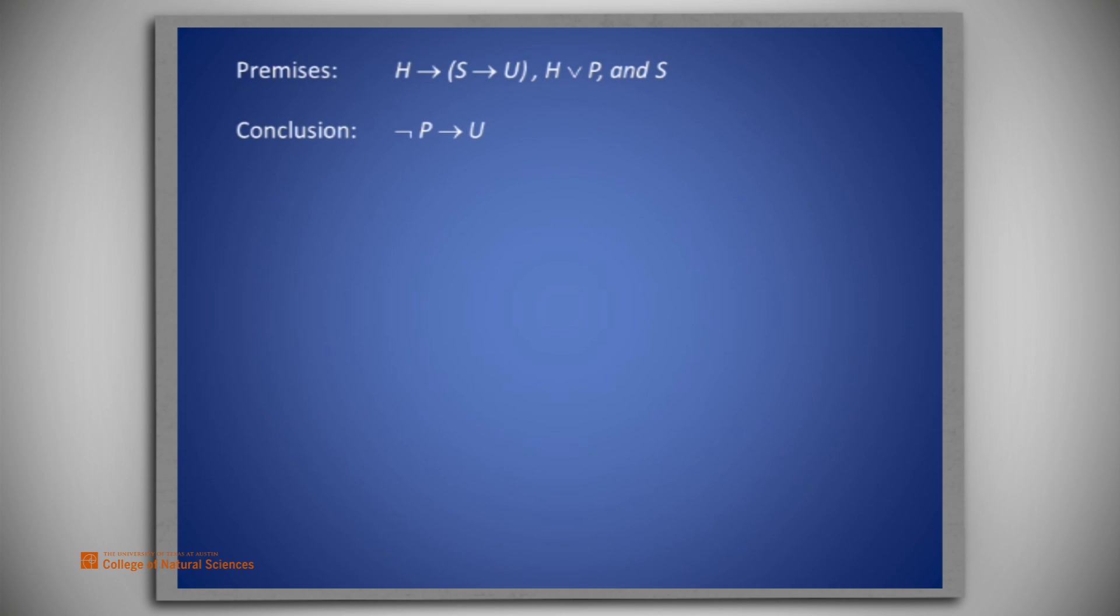Since not P was added as a conditional premise, we don't have the conclusion U from the original premises. What we have from the original premises is that not P implies U. So, it seems as if a good place to begin this proof is with a conditional premise of not P.